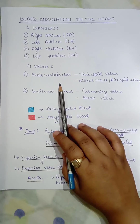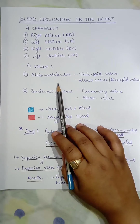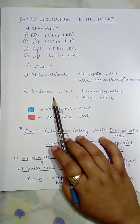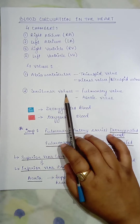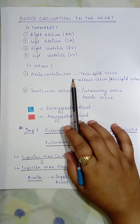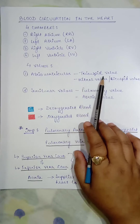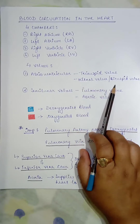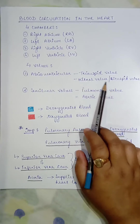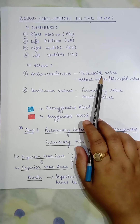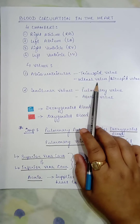The atrioventricular valves are present between the atrium and the ventricle. The semilunar valves get their name from their shape — they take a semilunar shape when open. The atrioventricular valve is of two types: the tricuspid valve and the mitral valve, also called the bicuspid valve. The tricuspid valve is found on the right side of the heart and the mitral valve on the left side.